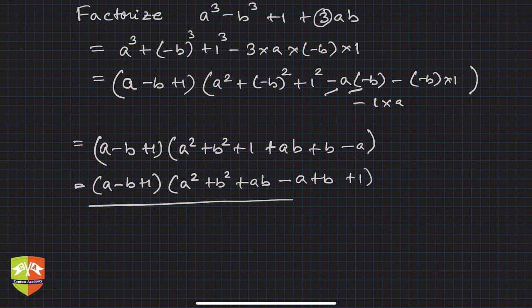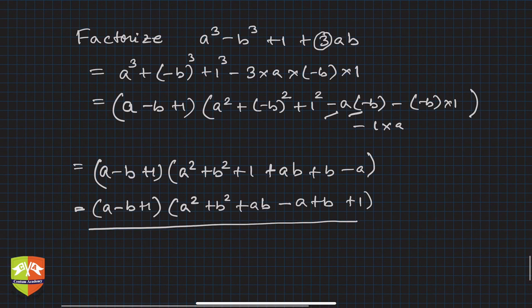So these are the two factors of the given expression. The key learning is: when you have three terms that can be reduced to cubes and a 3abc-type term, you can use this identity to factorize the expression.